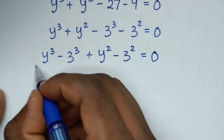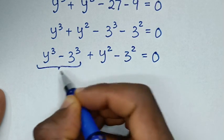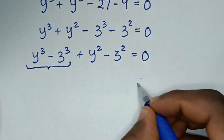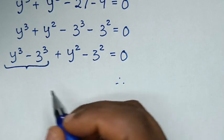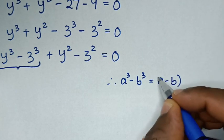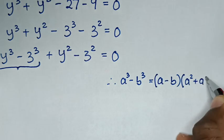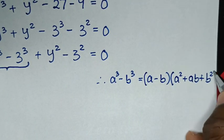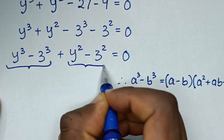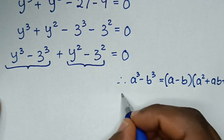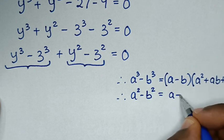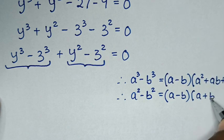Then the first part, y cubed minus 3 cubed, is in the form of a perfect cube difference. We apply the rule: a³ − b³ = (a − b)(a² + ab + b²). For the second part, y squared minus 3 squared, we apply the difference of squares rule: a² − b² = (a − b)(a + b).